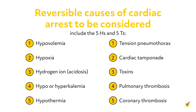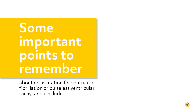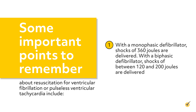Some important points to remember about resuscitation for ventricular fibrillation or pulseless ventricular tachycardia: with a monophasic defibrillator, shocks of 360 joules are delivered. With a biphasic defibrillator, shocks of between 120 and 200 joules are delivered.